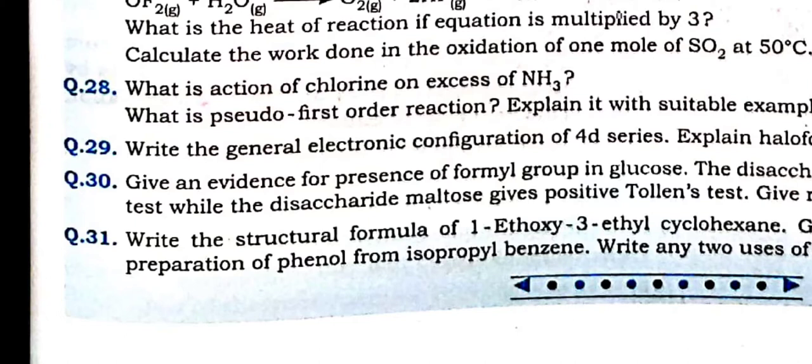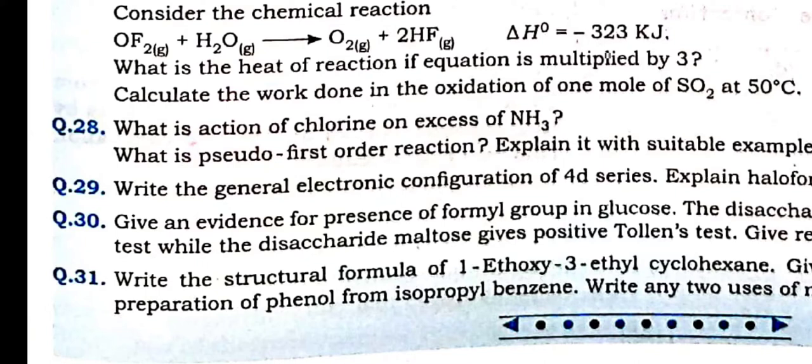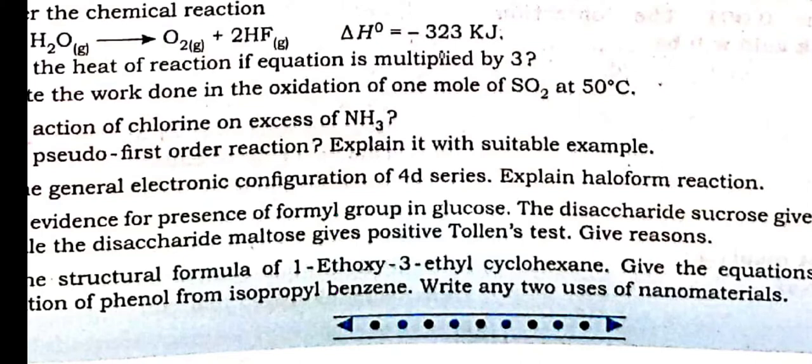Next question is from 2 different chapters: first from group 16 and 17 elements — action with ammonia. Next: pseudo first-order reaction — when a reaction behaves as higher order but is found to be first order, it is called pseudo first-order reaction. We have to explain with 2 examples given in our textbook. One example is hydrolysis of methyl acetate. The other example in the textbook is hydrolysis of sucrose. Any example you can write.